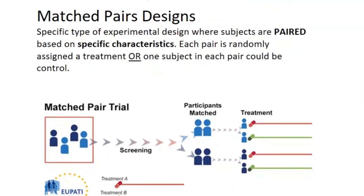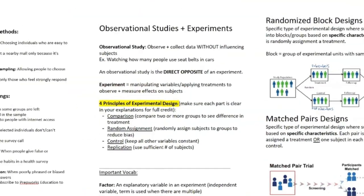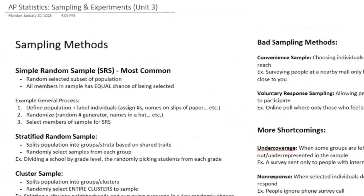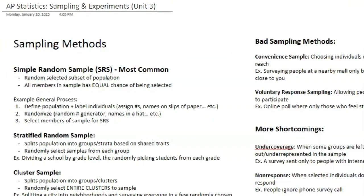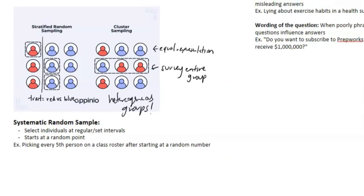The last experimental design type is matched pairs design — a specific type where subjects are paired based on specific characteristics, and each pair is randomly assigned a treatment, or one subject in each pair could be a control. For example, to eliminate gender bias you could pair a male with a female and randomly assign treatments between them. That was a lot of vocab — make sure you really know these terms because they form the basis for interpreting and designing experiments.